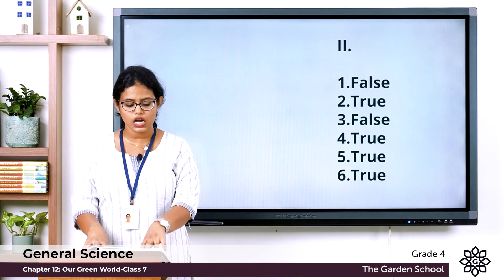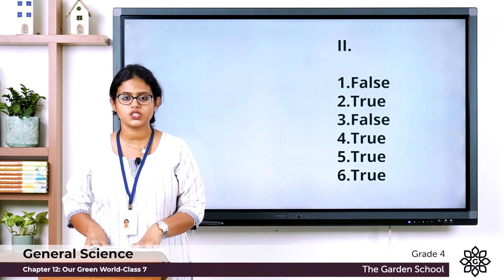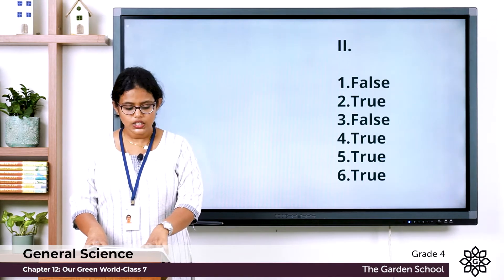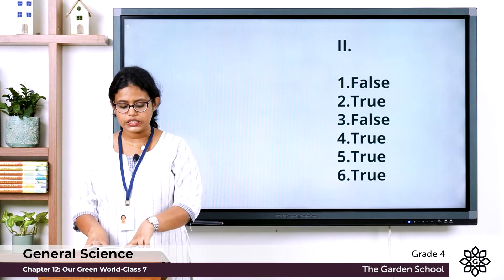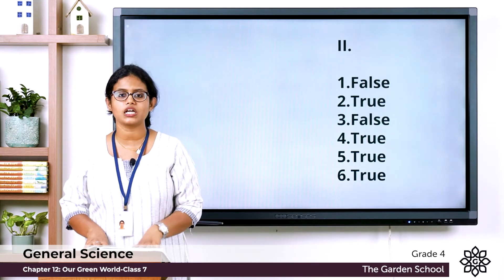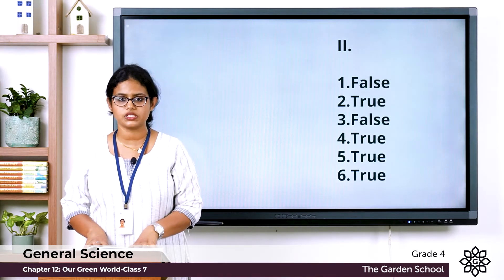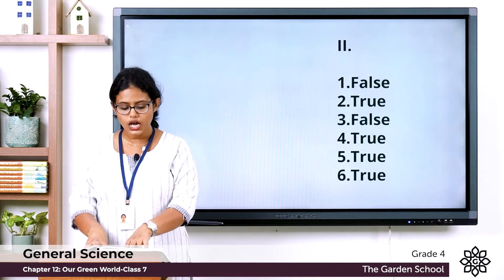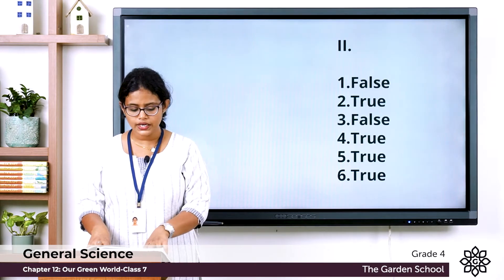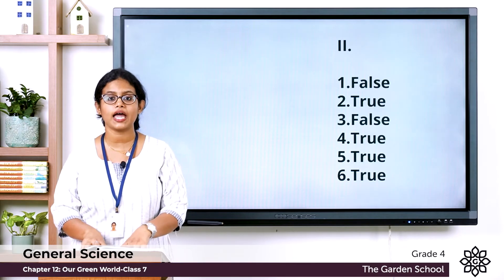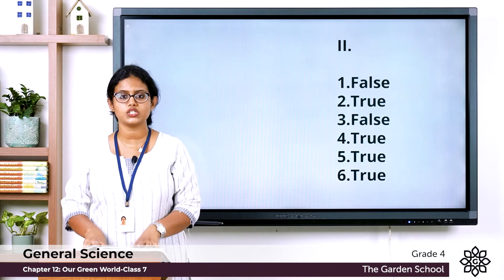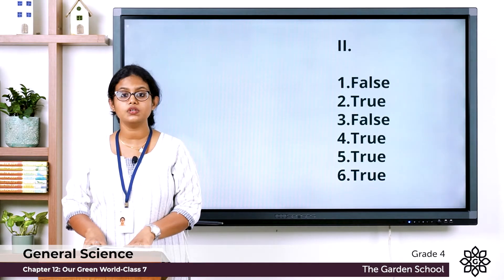Statement three: forests are home to only animals. The answer is false. Statement four: human actions are responsible for the decrease in forest areas. The answer is true — people started cutting down trees for different purposes. Statement five: a marine sanctuary protects rare marine animals. The answer is true — the marine sanctuary protects rare marine animals and plants.